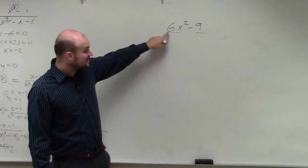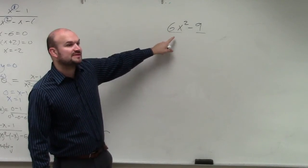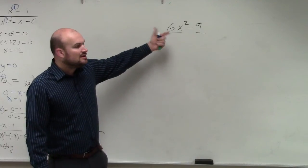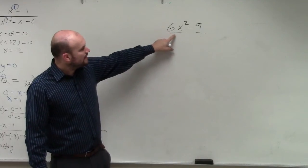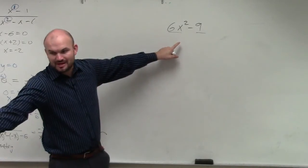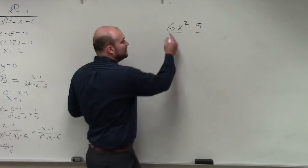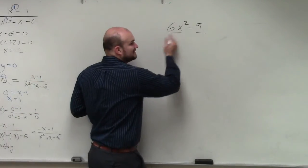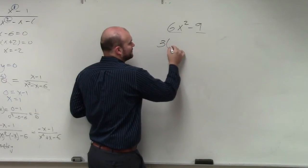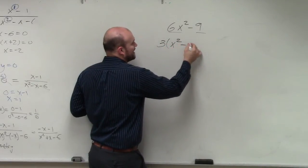6 is not a square term. You cannot take the square root of 6, so you cannot apply the difference of two squares. So looking at this, the main important thing — the directions say to factor out the GCF. You guys can see that these both share a 3. So I factor out a 3, and I'm left with x squared minus 3.